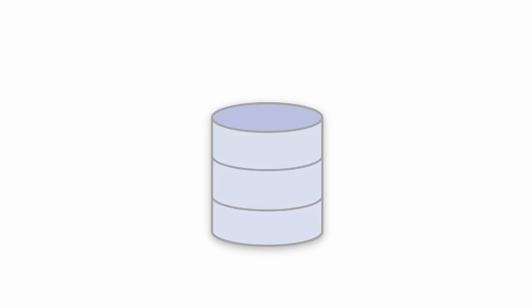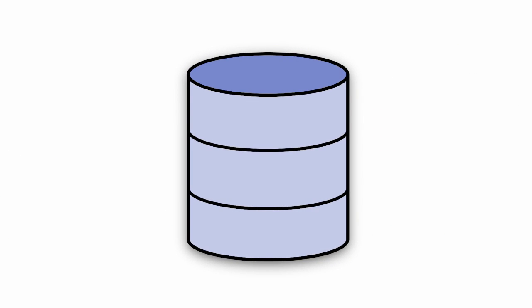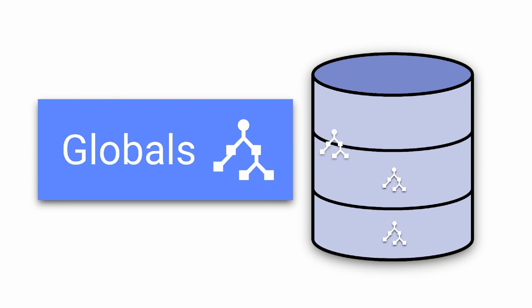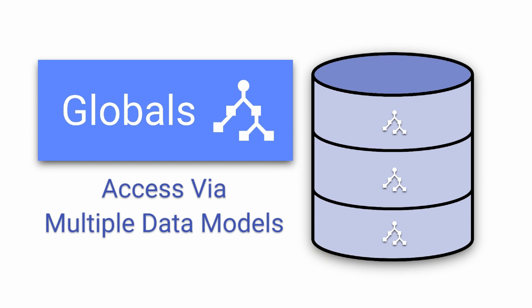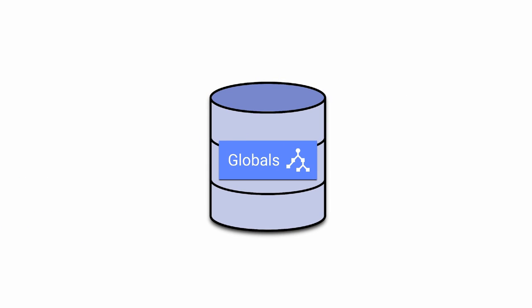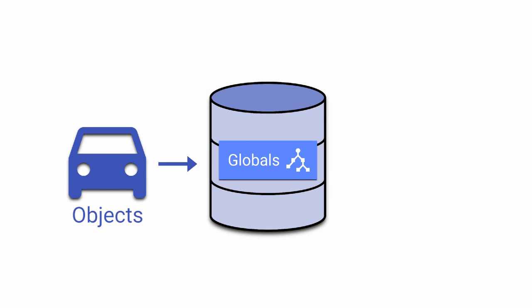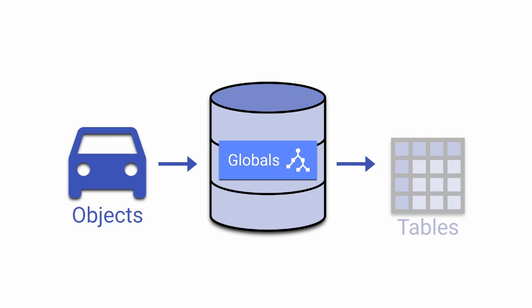Inside databases, the data is stored in structures called globals. Globals are the foundation of the performance and flexibility of Cache. Updating and retrieving data stored within globals is fast. The use of globals enables Cache to provide access via multiple data models at the same time. For example, when application code saves an object, the object is immediately accessible as a row in a table.